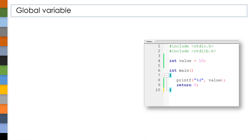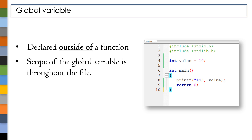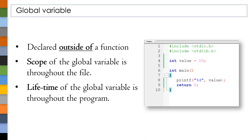Now let's see what a global variable is. Variables that are declared outside of a function are known as global variables. Without any storage class specifiers, the scope of a global variable is throughout the file, meaning we can access it from all functions in the file where it is declared. The lifetime of a global variable is throughout the program — memory is allocated to the global variable when we start executing the program, and that memory is destroyed once we finish execution.